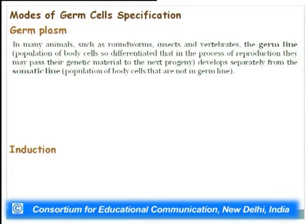The two modes of germ cell specification: one is called the germ plasm. Germ cells are the cells giving rise to gametes. There is sexual dimorphism, so there will be a male gamete and a female gamete which will fuse to give rise to an entire individual. One specification mode is the germ plasm, and the second mechanism is called induction.